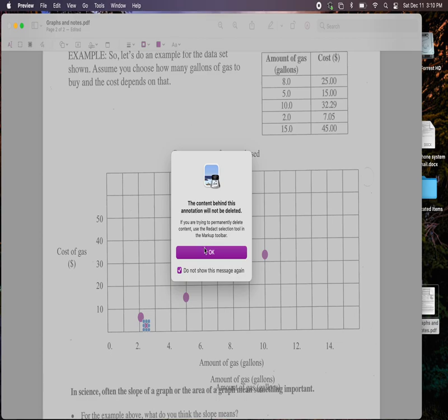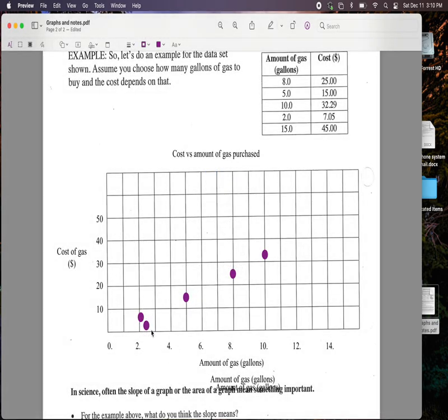And then I'm going to want it 2 gallons, and that's going to be around $7. Hey, how about don't show that message again? And then I have one at 15 gallons, and it's at $45. So if I look at this, they look like they're in pretty much of a straight line.